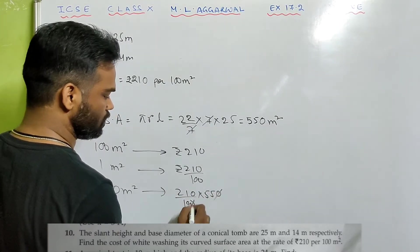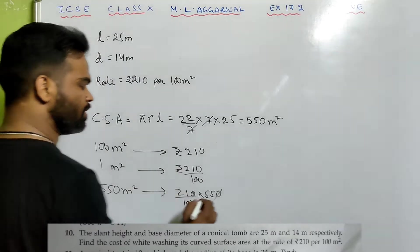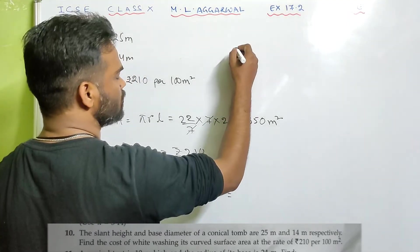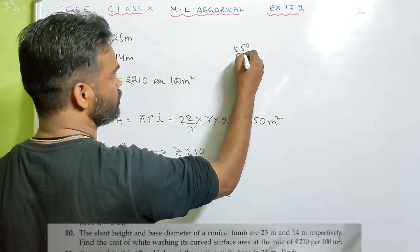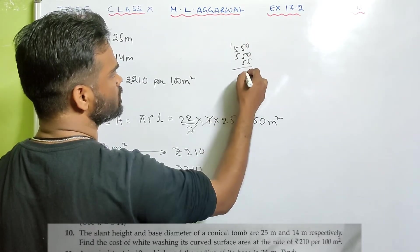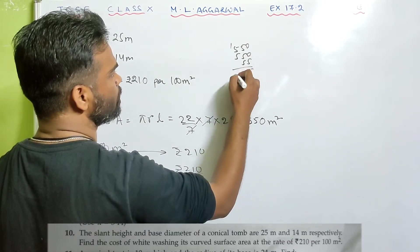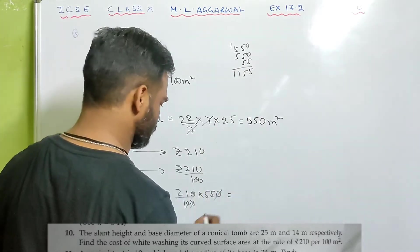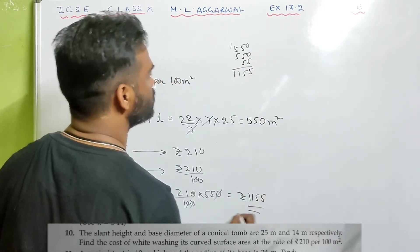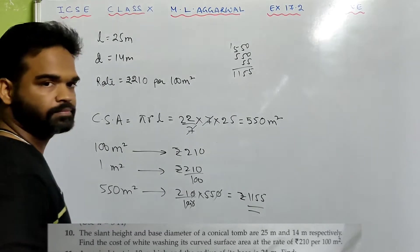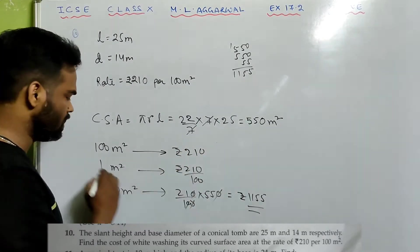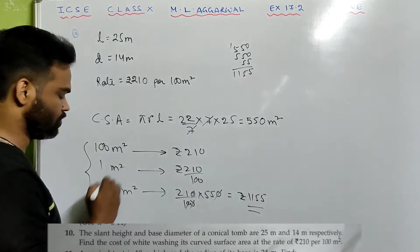Using unitary method: 100 meter square costs rupees 210, so 550 meter square costs 210/100 × 550. Simplifying: 550 + 550 + 55 = 1155. The cost is rupees 1155. Very easy — just find curved surface area and then apply unitary method.